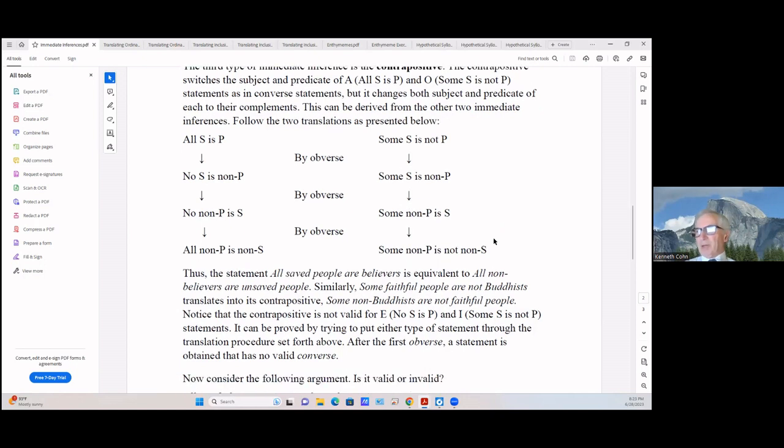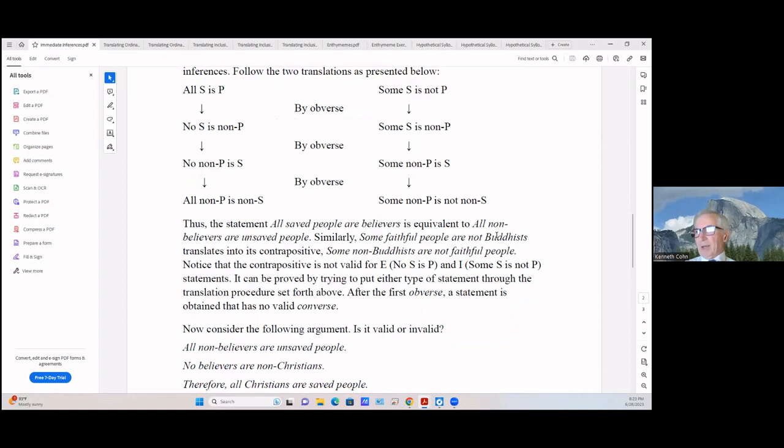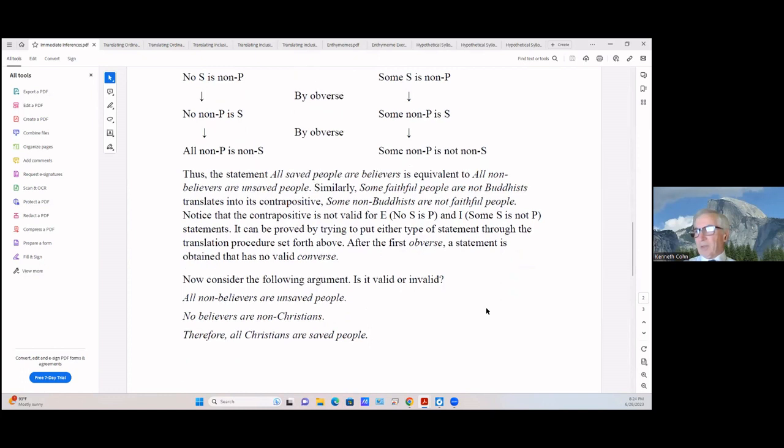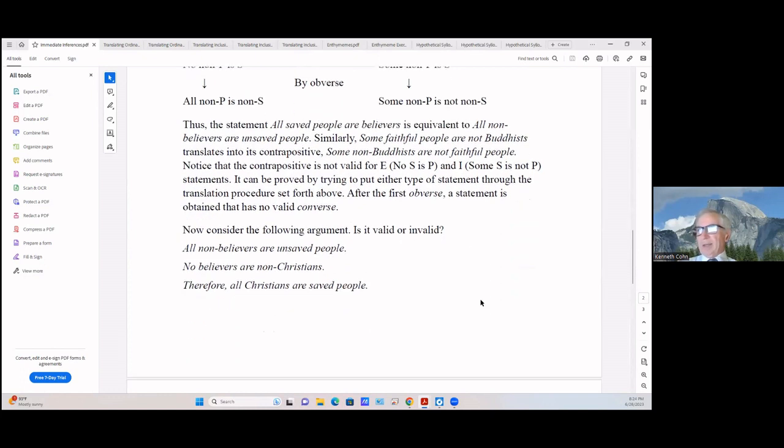Notice that the contrapositive is not valid for E, no S is P, and I, some S is not P. For those statements it doesn't work, and that can be proved by trying to put either type of statement through the translation procedure set forth just right above. After the first obverse, a statement is obtained, there is no valid converse.